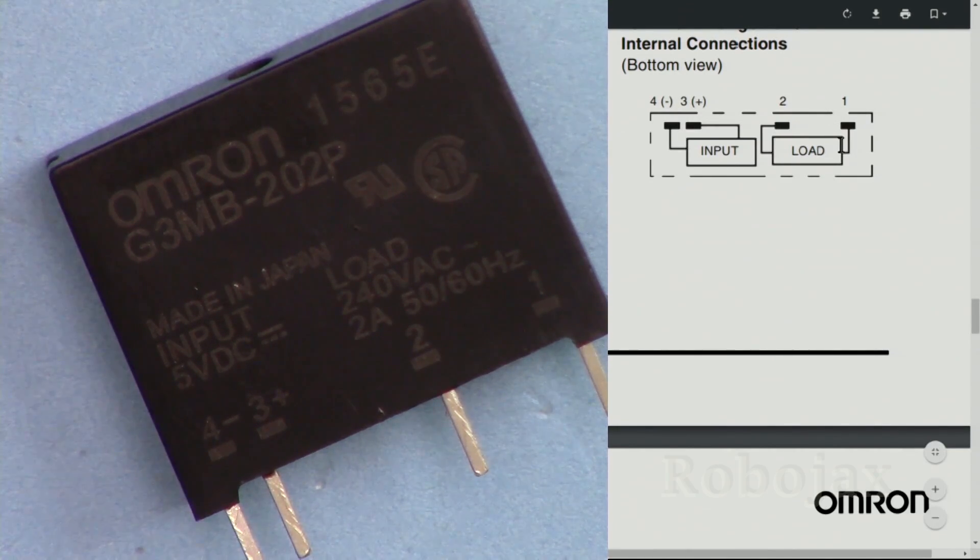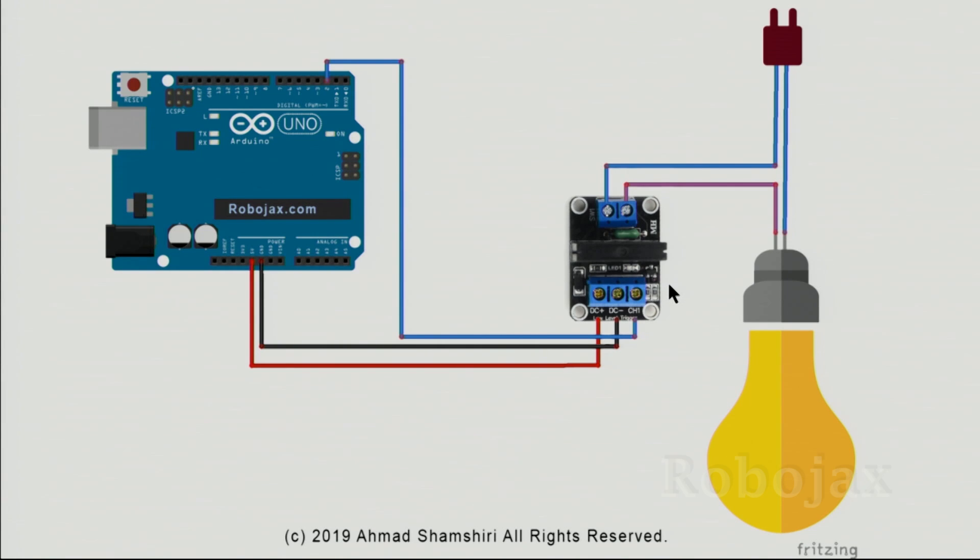Here is a solid-state relay wiring diagram, exactly the same as the regular relay. Channel 1 or input has been connected to pin 2. The middle pin is ground, connected to ground. The left pin is plus DC, connected to 5 volts.